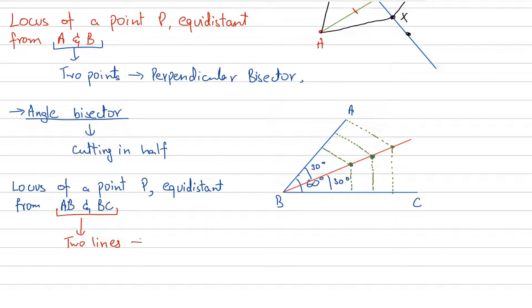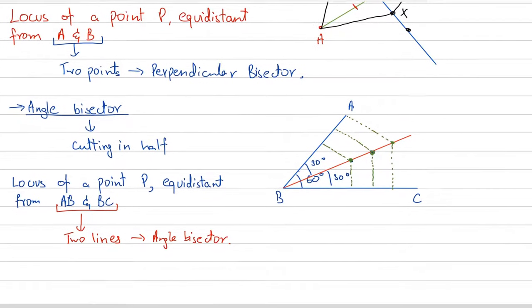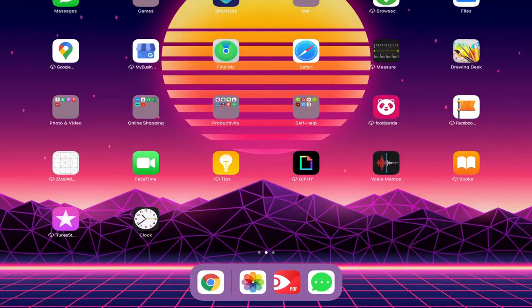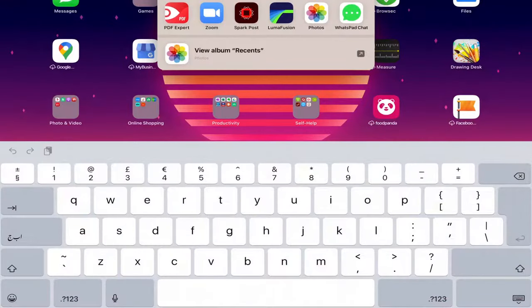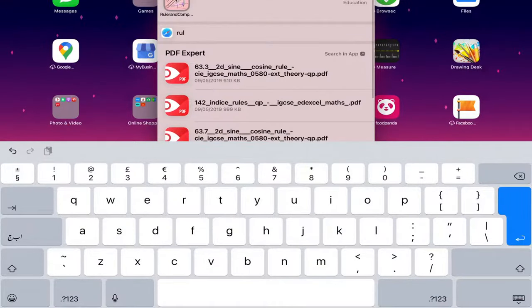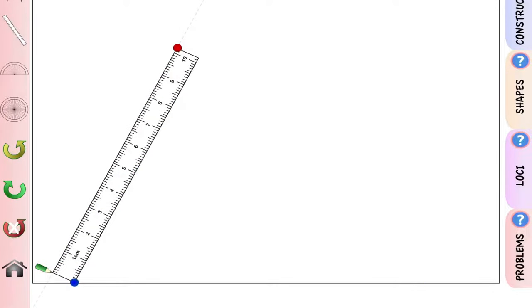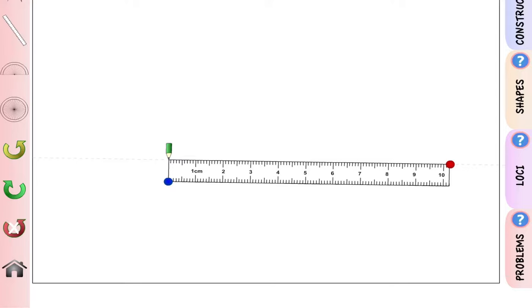We make an angle bisector when the question asks us to construct the locus of a point P equidistant from two lines. Whenever you have to draw a locus from two lines, you make an angle bisector. I'll now explain how to construct one using the Ruler and Compass app.